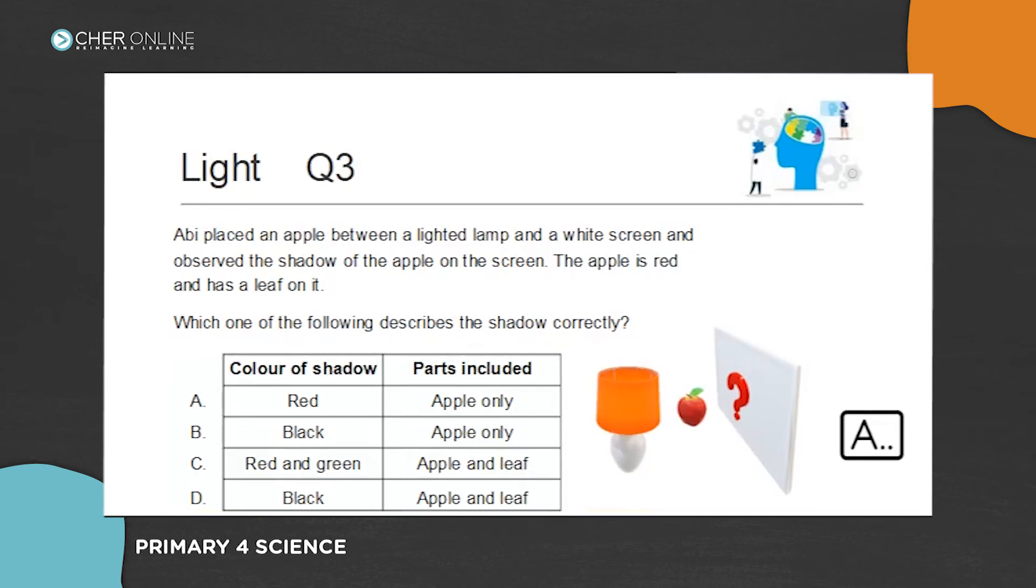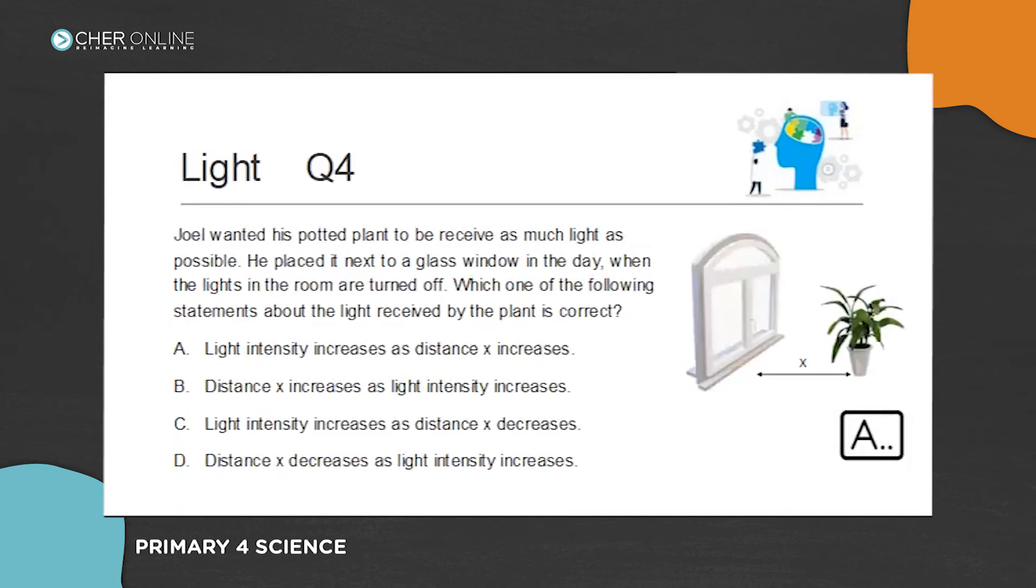Okay, get ready. The answer is... shadow has to be black. Shadow is black. Both the apples and the leaf will have a black shadow. Next question, please.